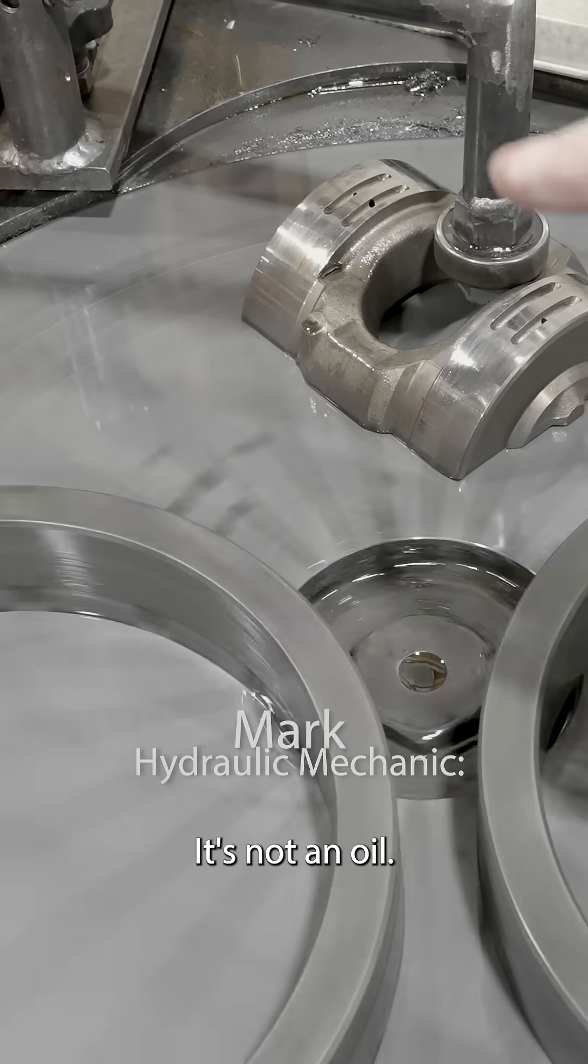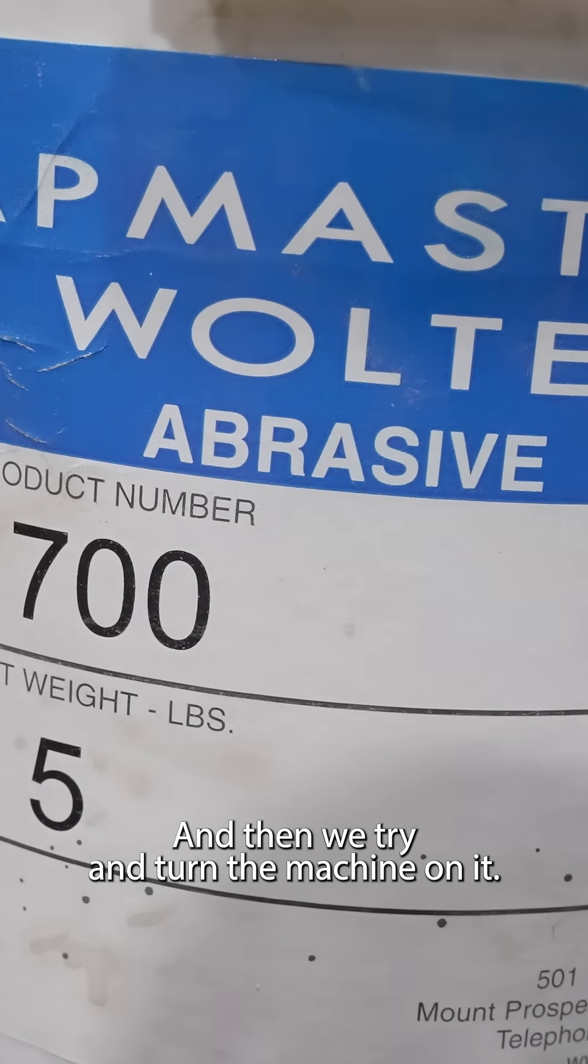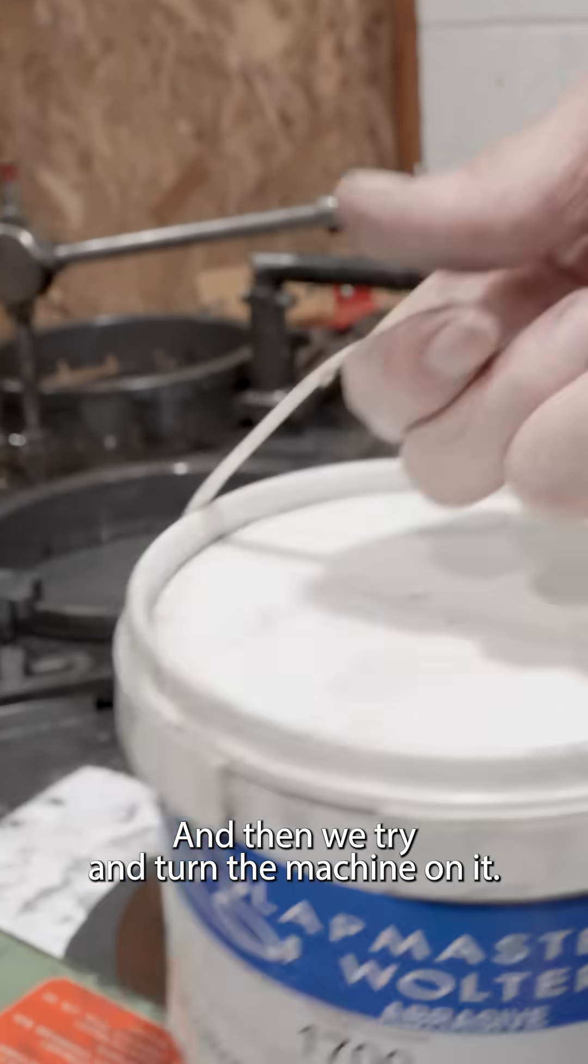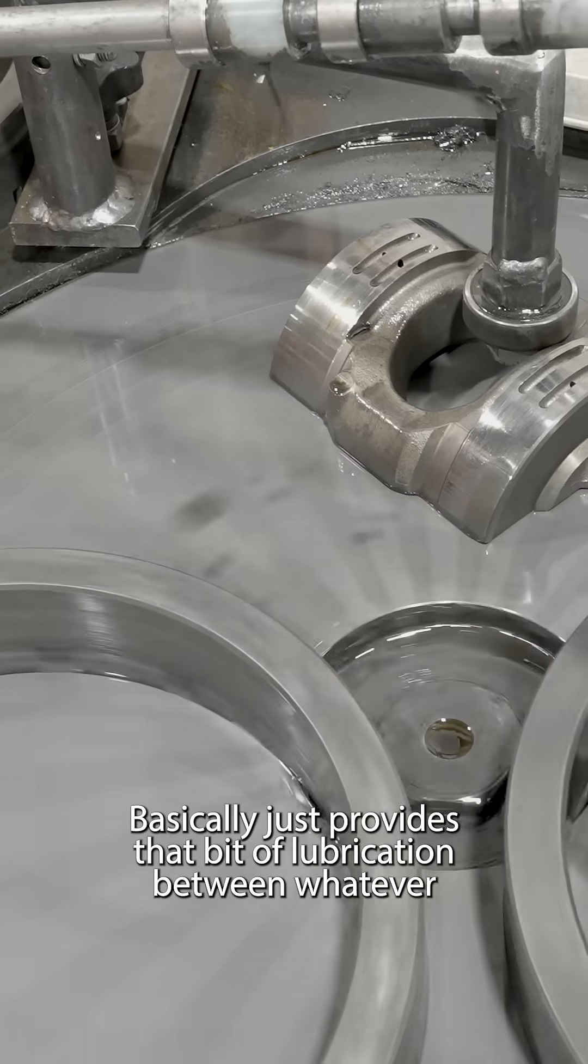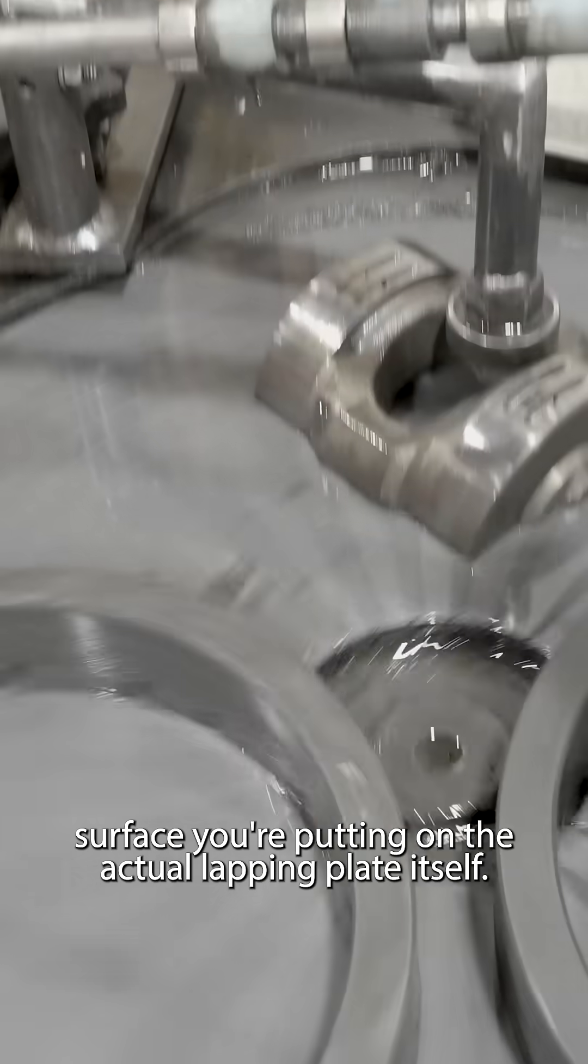It's not an oil. It's just designed to suspend the aggregate. And then when you turn the machine on, it basically just provides that bit of lubrication between whatever surface you're putting on the actual lapping plate itself.